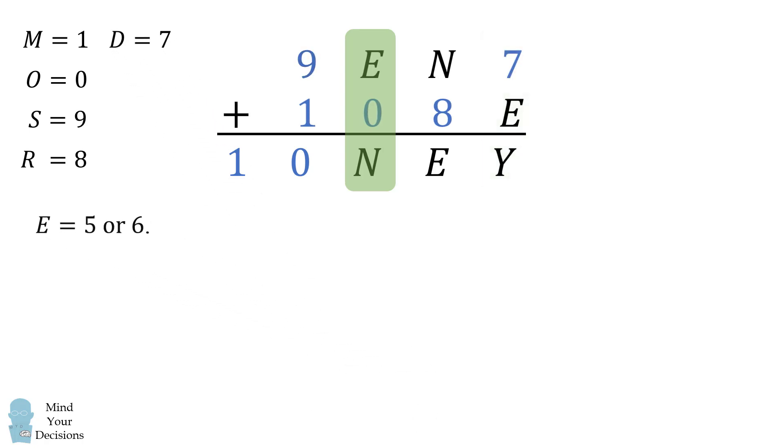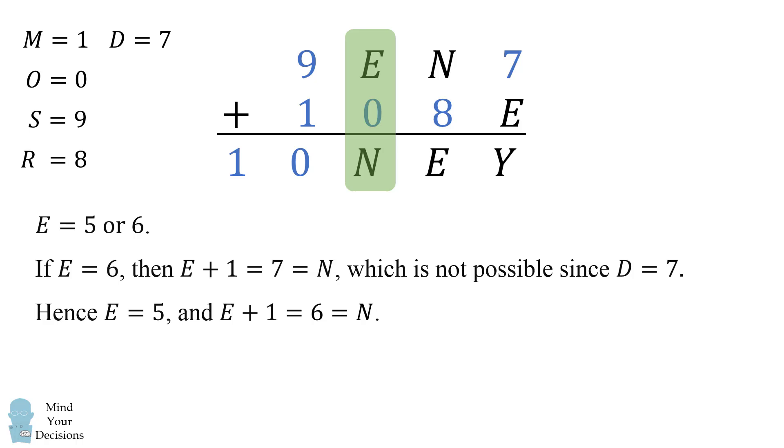So what would happen if E is equal to 5 or 6? Well suppose E is equal to 6. In that case, E plus 1 is 7, which would be equal to N. But this is not possible because D is already equal to 7. So we must have E is equal to 5, which means E plus 1 is equal to 6, which is equal to N.